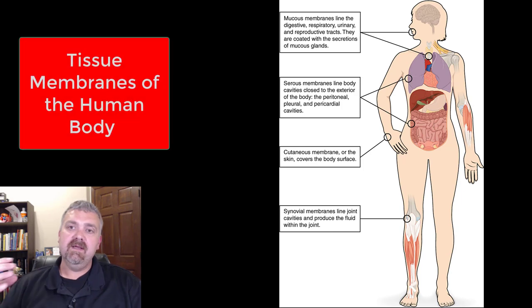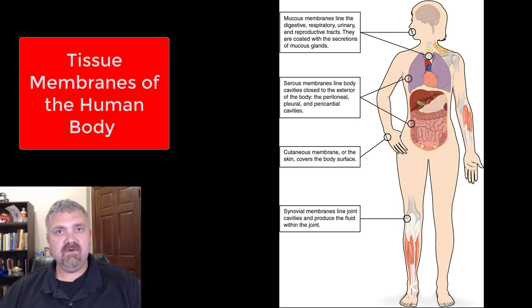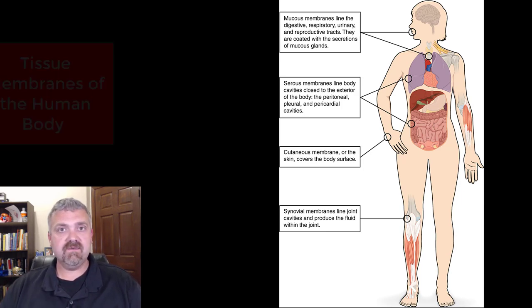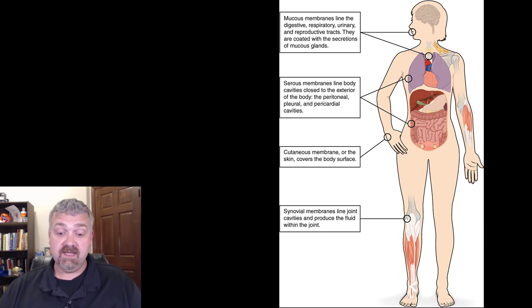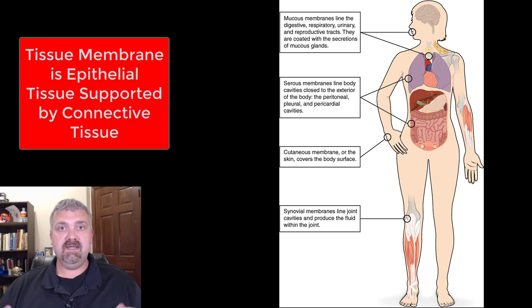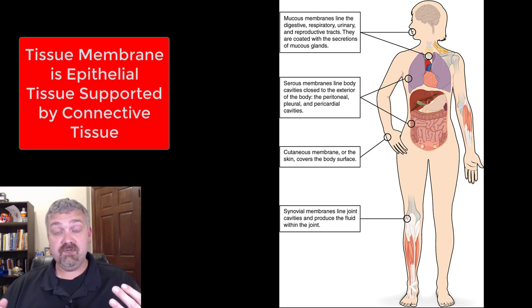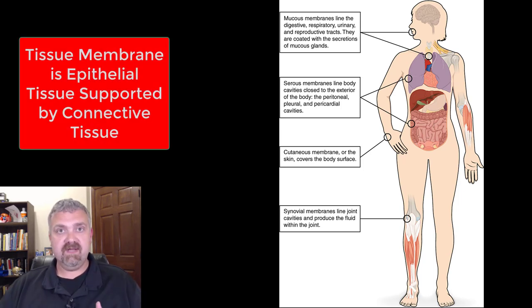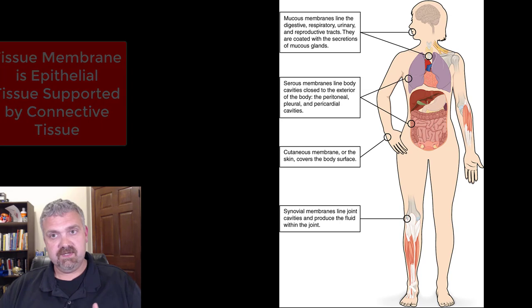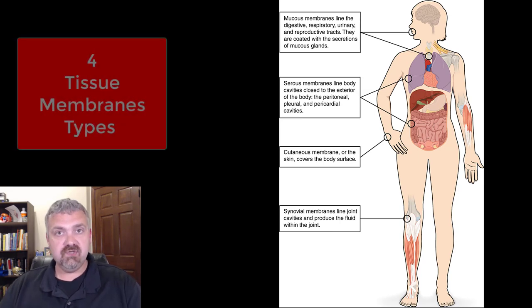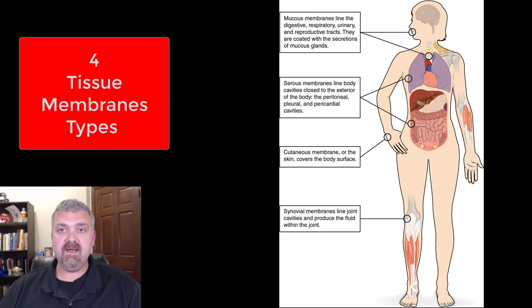Hey everybody, Dr. O here. This video I want to cover tissue membranes. Let's first of all see what a membrane is. A membrane is a layer of epithelial tissue with an underlying layer of connective tissue. There are four tissue membranes in the human body.